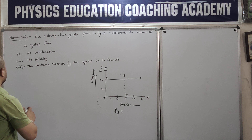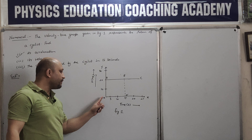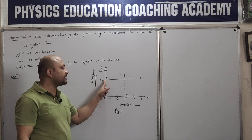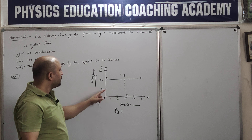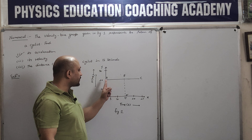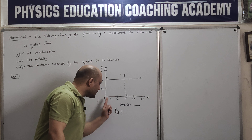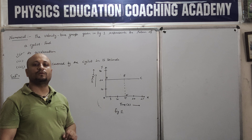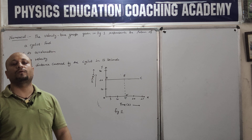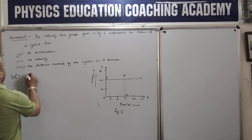Now we have to find the acceleration. At time t = 0, the velocity of the cyclist was 20 meter per second. As time passed, look carefully, the velocity of the cyclist had no effect on it - it remained the same at 20 meter per second. This means from 0 to 15 seconds, there was no change in the cyclist's velocity. So what is the definition of acceleration? Change in velocity upon time taken. The change in velocity is 0, so acceleration is 0. First answer: acceleration = 0.